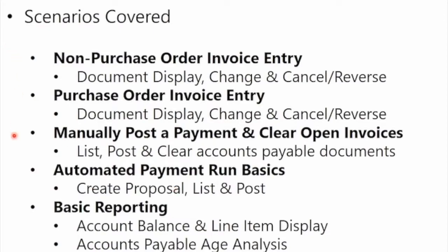Now that we've covered invoice entry and different types of payment, we'll then cover basic reporting. On the reporting side, we'll cover how to look at a vendor account balance in summary and then go to the individual line items that make up that balance. We'll also cover a basic accounts payable age analysis report, which sections up open line items into age analysis buckets — 0 to 30 days, 30 to 60 days, 60 to 90 days, and so on.